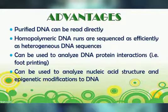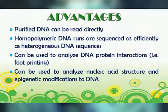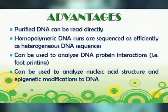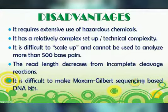The advantages of Maxim-Gilbert Sequencing are: 1. Purified DNA can be read directly. 2. Homopolymeric DNA are sequenced as efficiently as heterogeneous DNA sequences. 3. It can be used to analyze DNA-protein interactions, a process known as footprinting. 4. It can be used to analyze nucleic acid structure and epigenetic modifications to DNA.